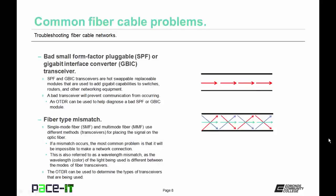It is possible for small form factor pluggable transceivers or gigabit interface converter transceivers to go bad. The SFP and GBIC transceivers are hot swappable replaceable modules that are used to add gigabit capabilities to switches, routers, and other networking equipment. A bad transceiver will prevent communication from occurring, and an OTDR can be used to help diagnose a bad SFP or GBIC module.